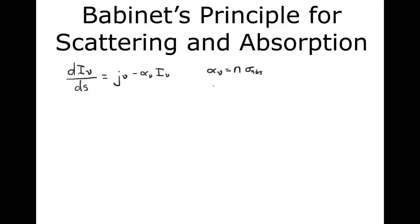We also talked about scattering, and we decided that we could put that inside of the emissivity term, saying our emissivity is the number density of scatterers times the cross-section for scattering times some angle-averaged background light, which we call J-bar. Basically we hid everything about the geometry and the absorptivity or reflectivity of our scatterers inside these two coefficients — the cross-sections for absorption and for scattering.